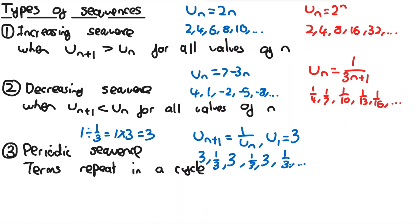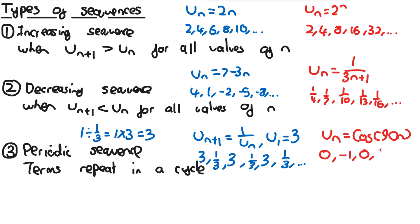Another example on the spec is u_n = cos(90n°). Writing out the sequence from n=1: cos90° = 0, cos180° = −1, then 0, then 1, then 0, then −1, and it keeps repeating like this. This is a periodic sequence because it repeats itself in a cycle.